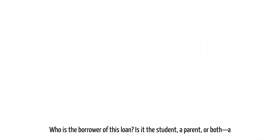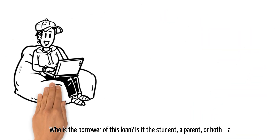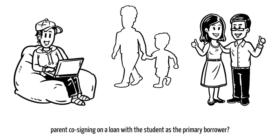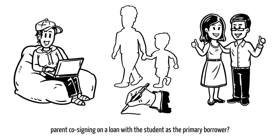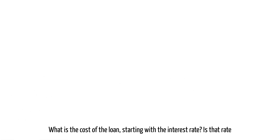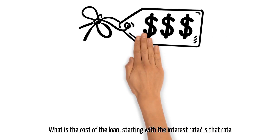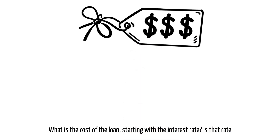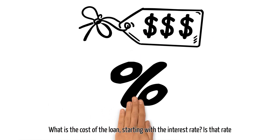Who is the borrower of this loan? Is it the student, a parent, or both — a parent co-signing on a loan with the student as the primary borrower? What is the cost of the loan, starting with the interest rate?